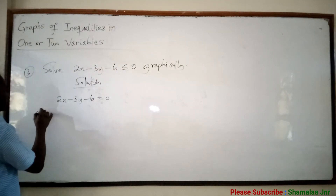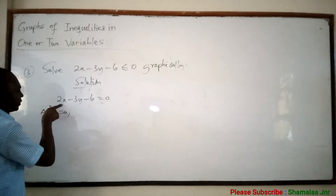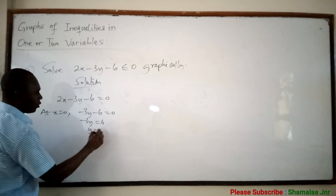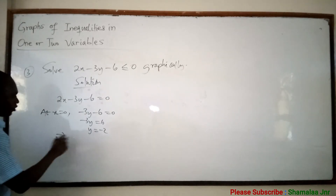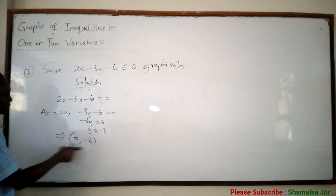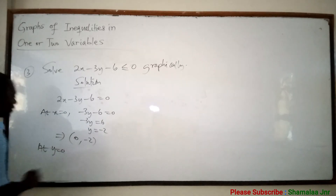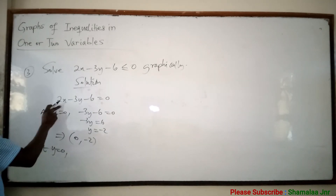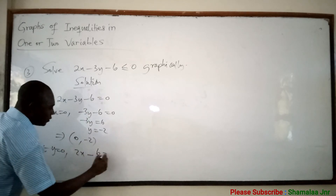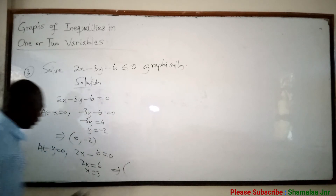How do you get 2 points? At x equal to 0, if you put 0 in for x, you get negative 3y minus 6 equal to 0, so negative 3y equals 6, meaning y equals negative 2. Therefore, you plot the point (0, negative 2) — always write the x-coordinate first. Also, at y equal to 0, you have 2x minus 6 equal to 0, so 2x equals 6, meaning x equals 3. This implies you plot the point (3, 0).